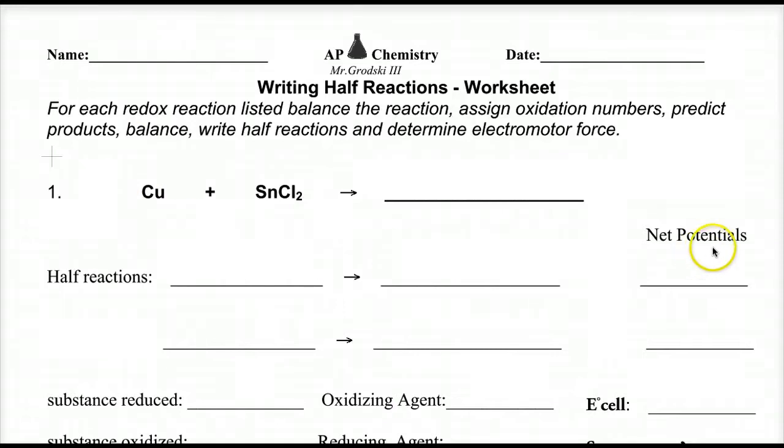In this lecture we are going to quickly go over how to assign net potentials for half reactions of redox reactions and come up with the E0 cell, which is the net voltage of the entire reaction, sometimes called the electromotor force.